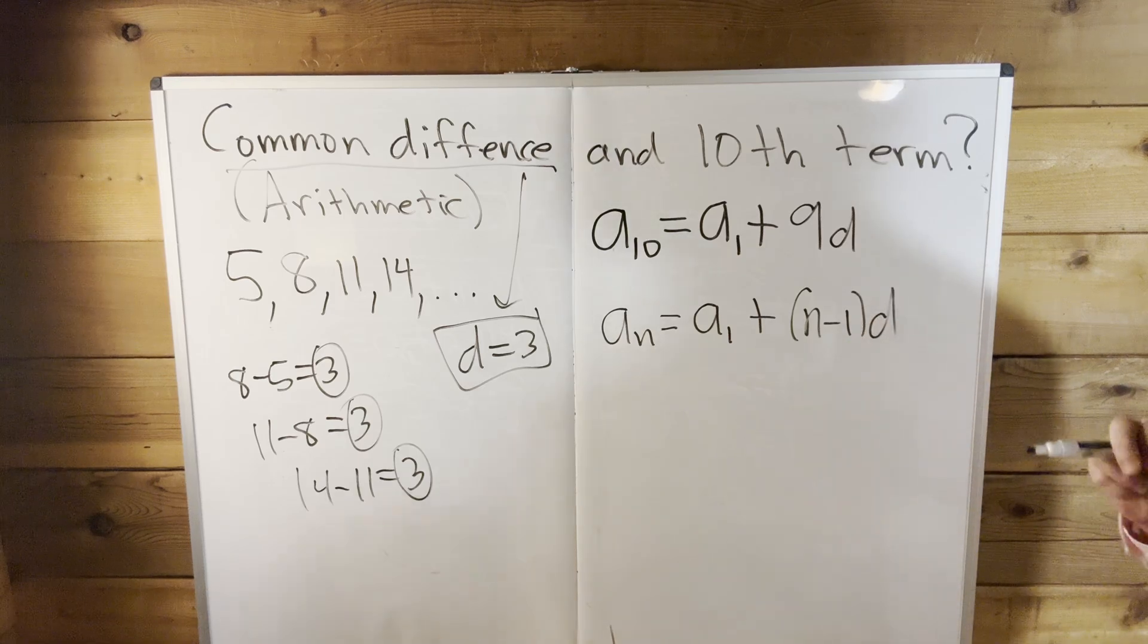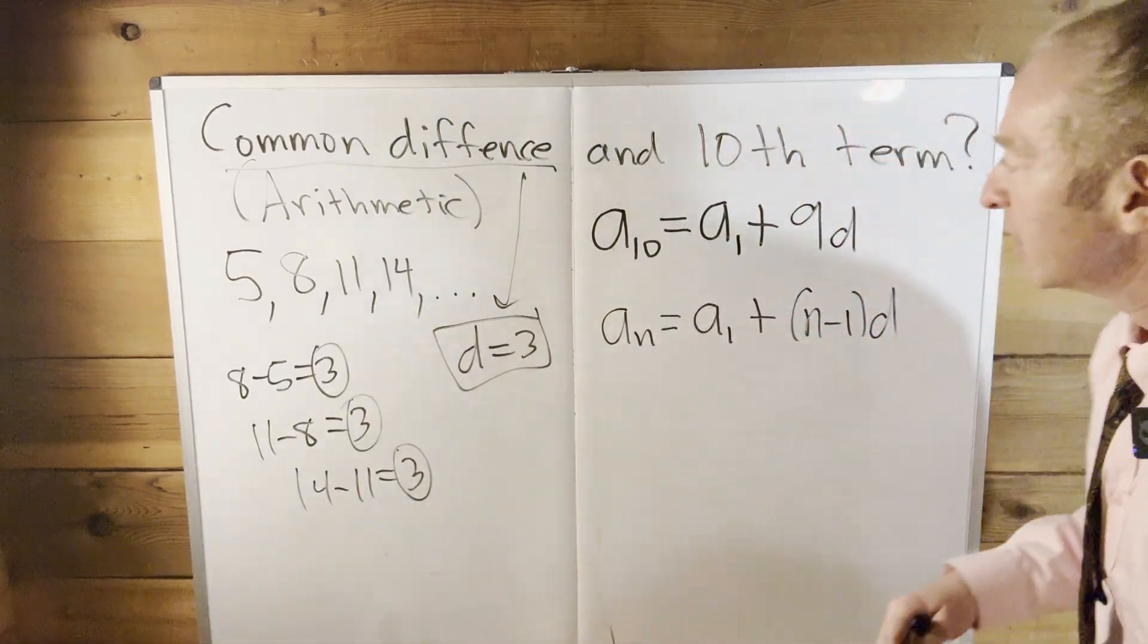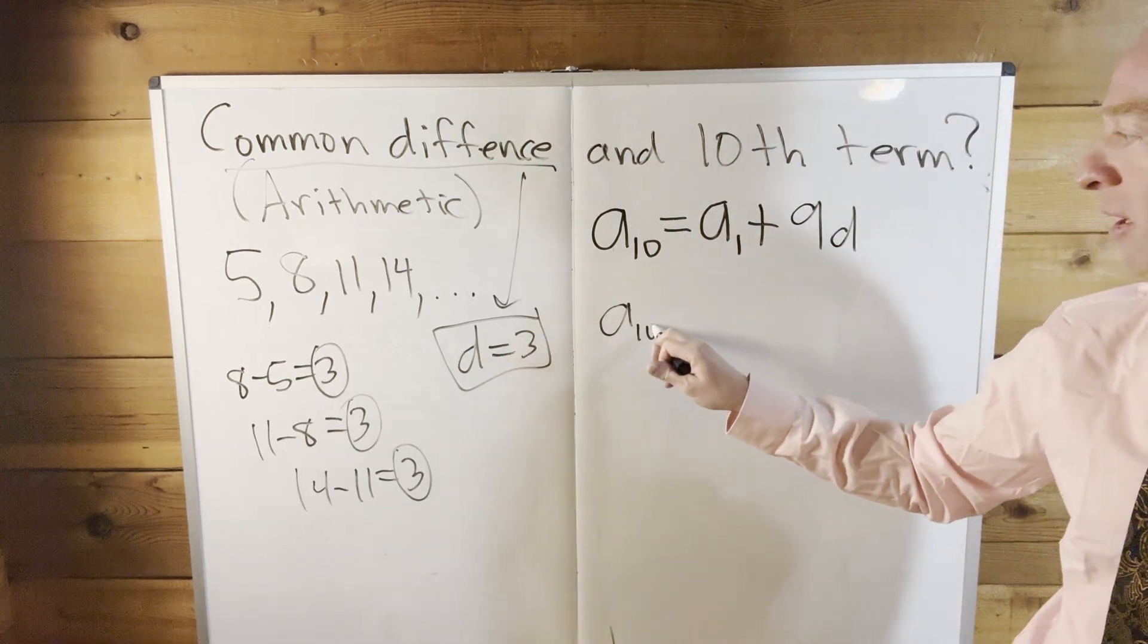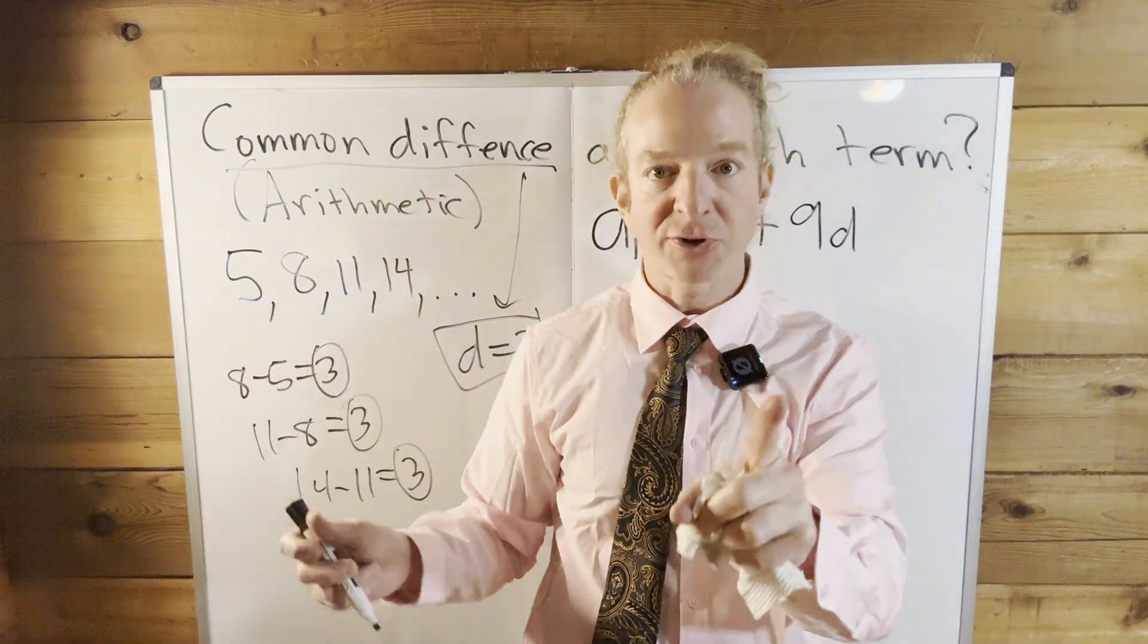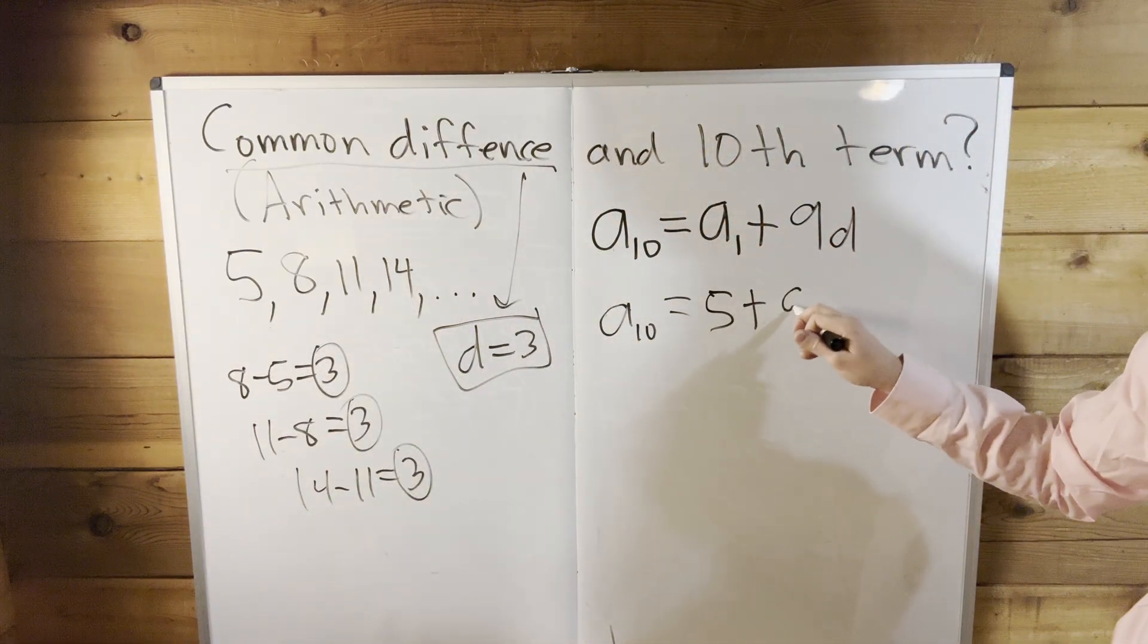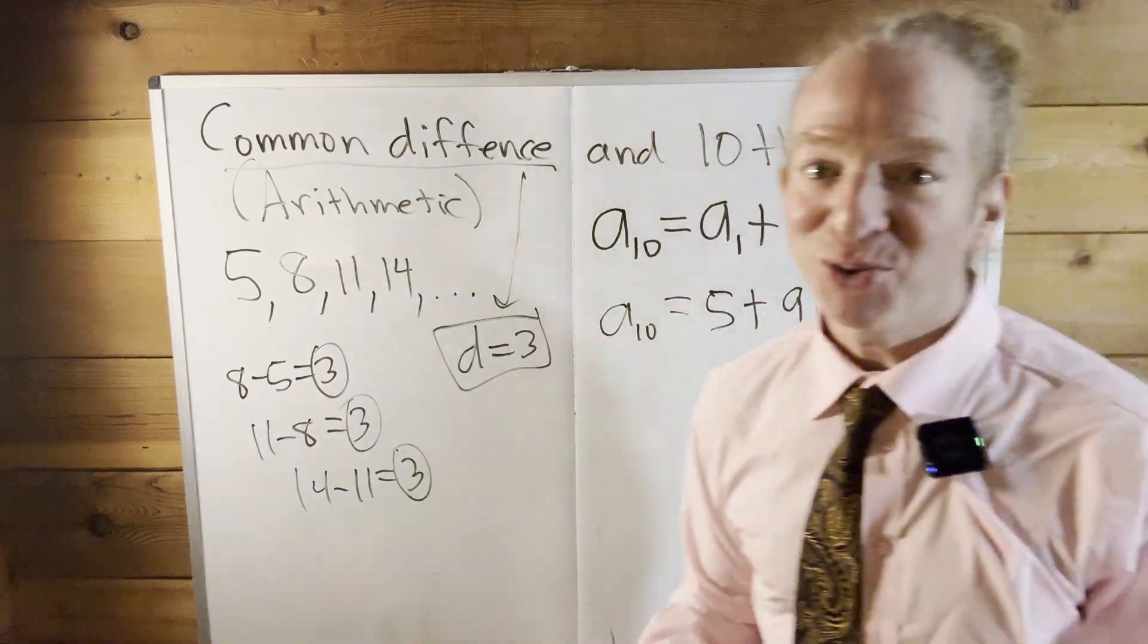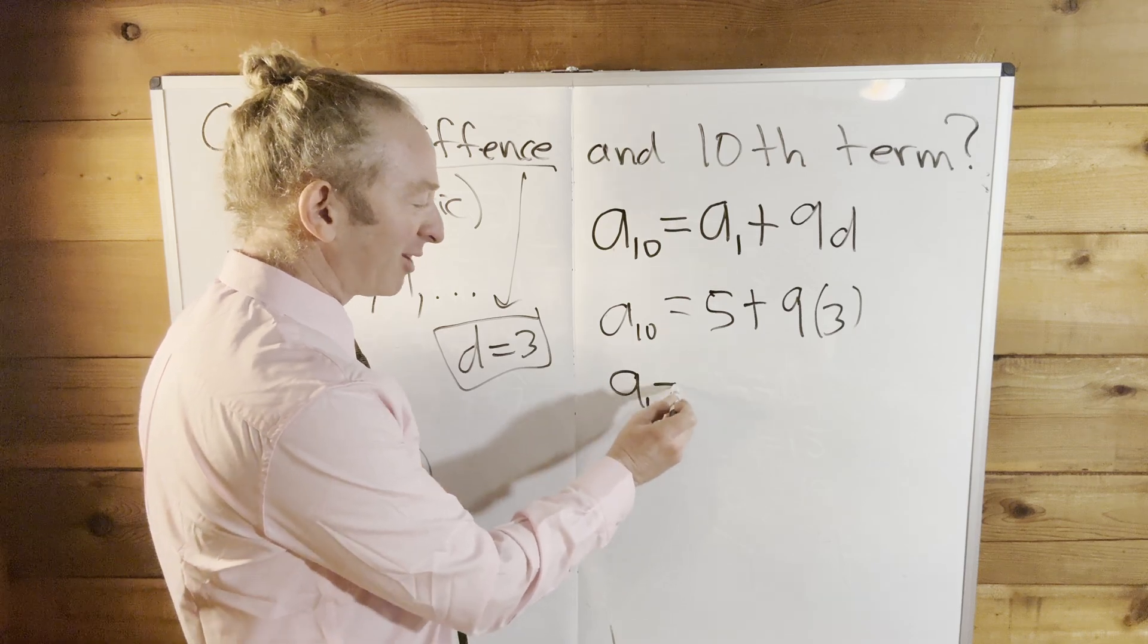You add n minus one common differences, right? Beautiful math. I love this stuff, so cool, right? So it's because once you get it, it's like oh. So a sub 10, well what is a sub 1? Well it's right here, it's 5, it's the first term, right?